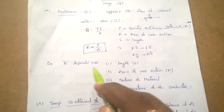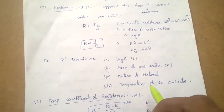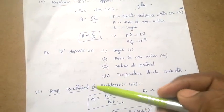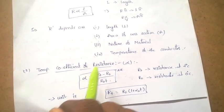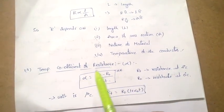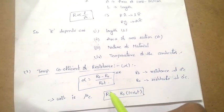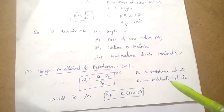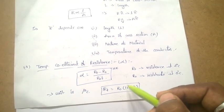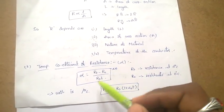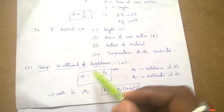Resistance also depends upon the nature of material and the temperature of the conductors. The temperature coefficient of resistance is denoted by alpha. Alpha equal to RT minus R-naught, divided by R-naught into T. Here RT is resistance at T degrees centigrade, and R-naught is resistance at 0 degrees centigrade. We can convert this to RT equal to R-naught into (1 plus alpha-naught into T). The units of the temperature coefficient of resistance alpha is per degree centigrade.